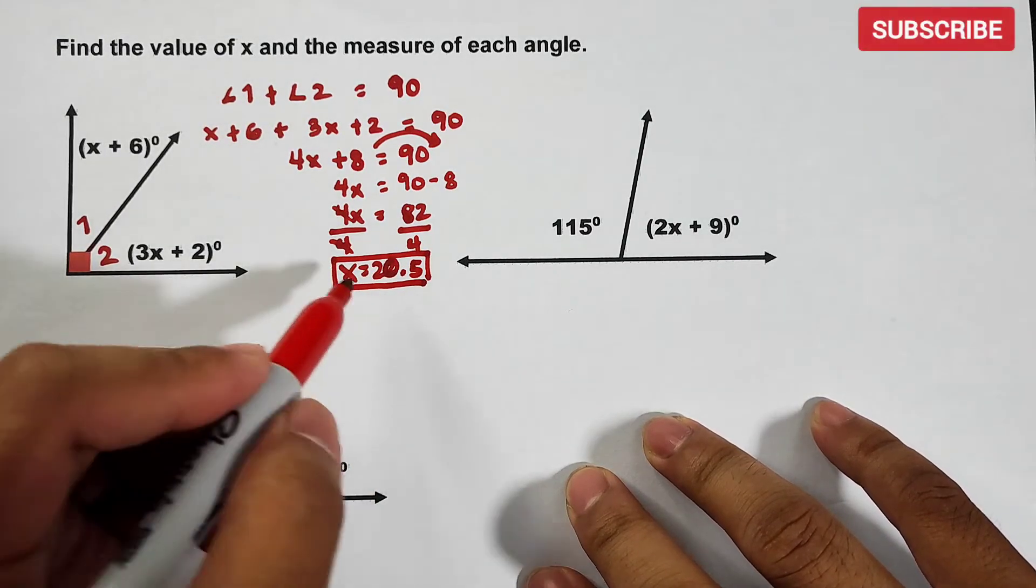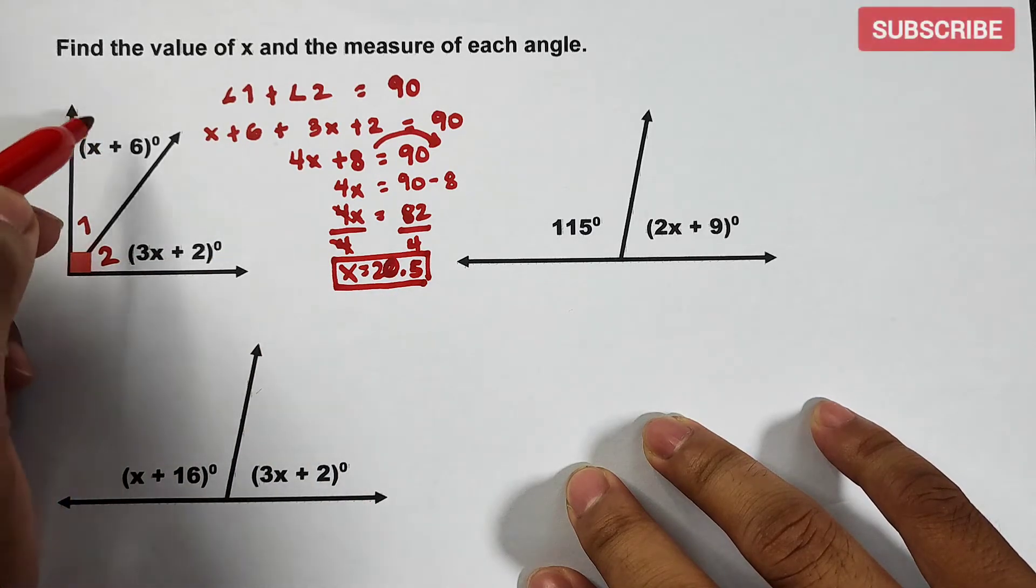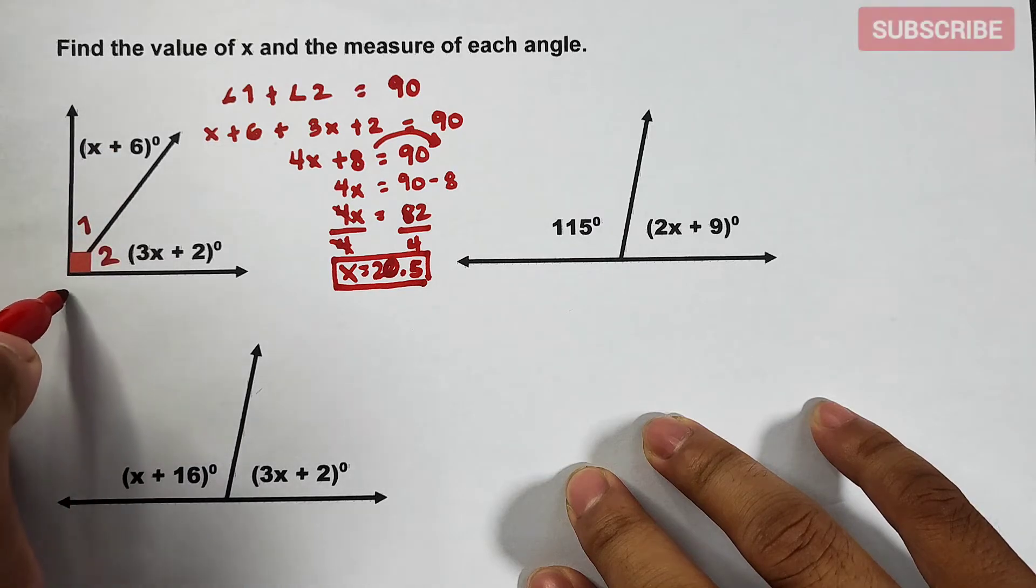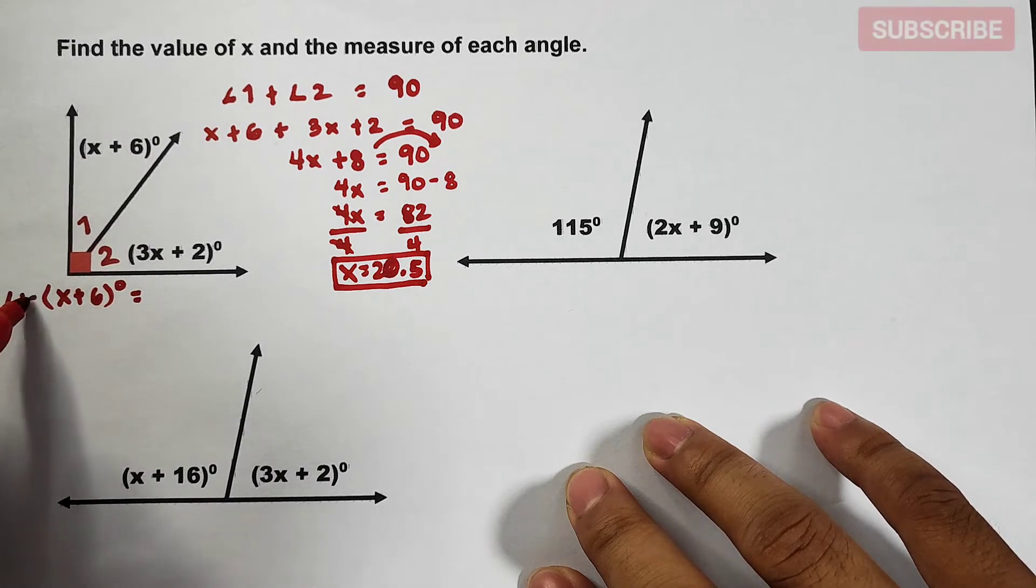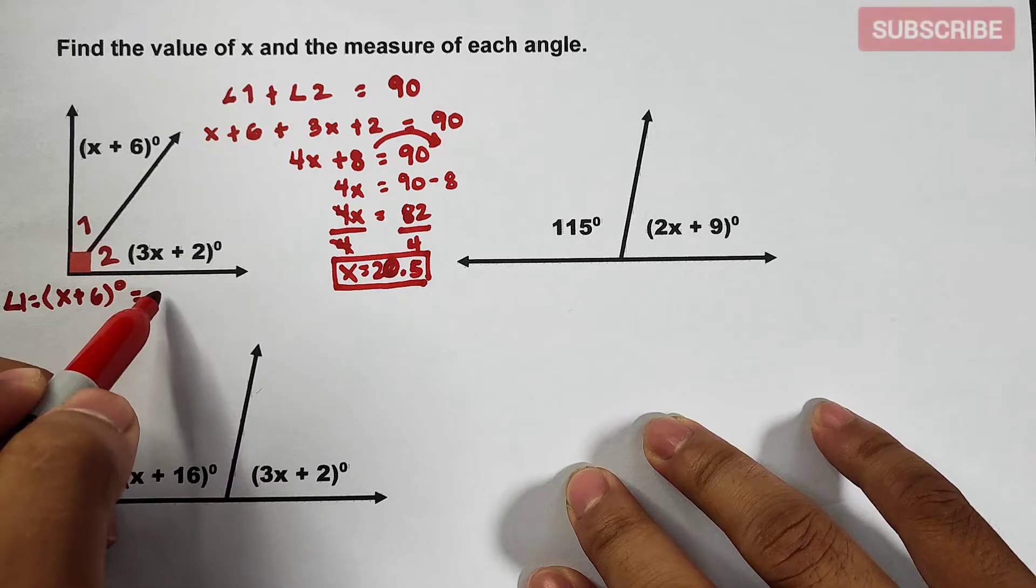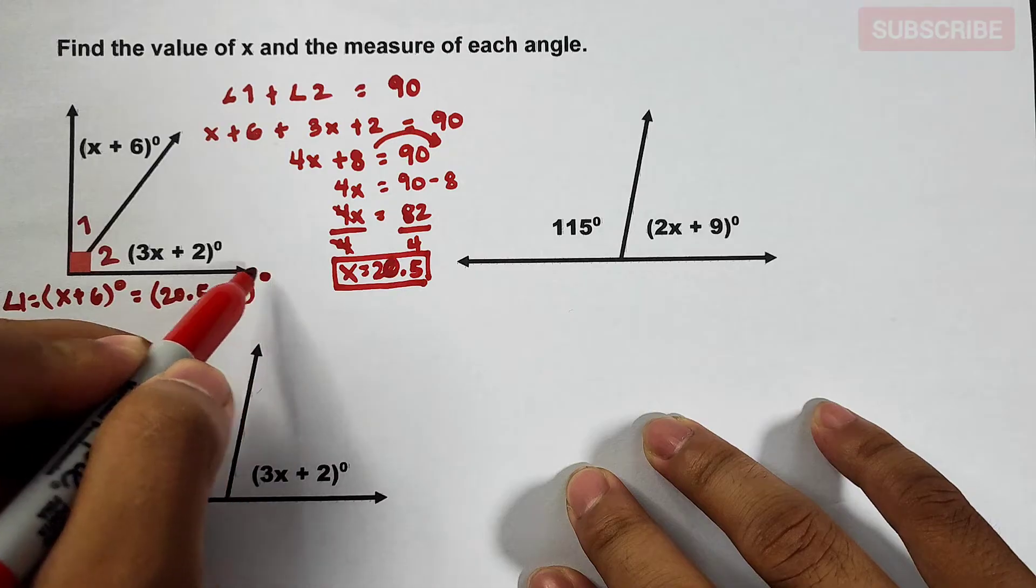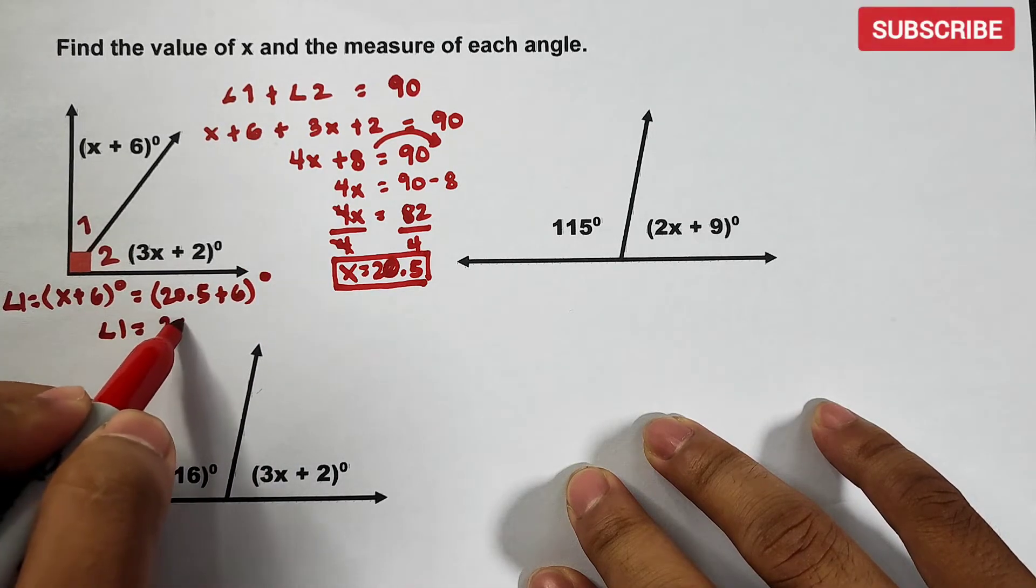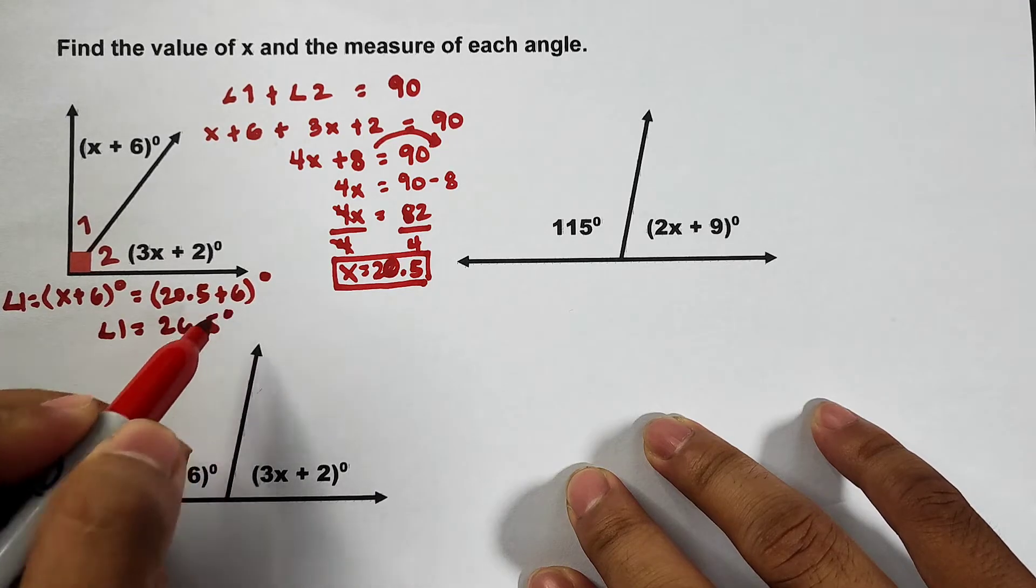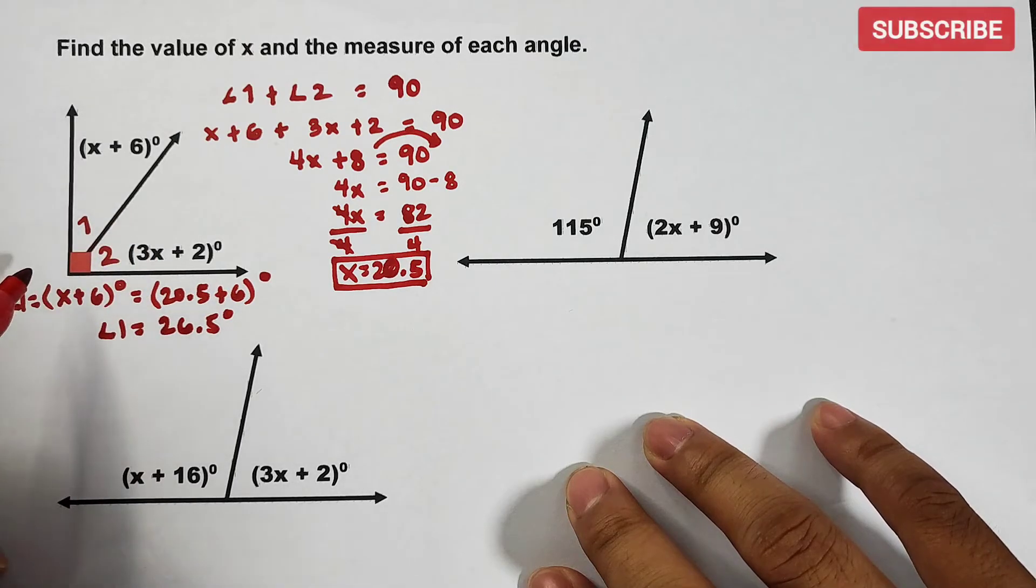Now, if x is equal to 20.5, x plus 6 degree, this is angle 1. So we have 20.5 plus 6 degrees, meaning your angle 1 is 26.5 degrees. So if this is 26.5 degrees, what is the value of angle 2?